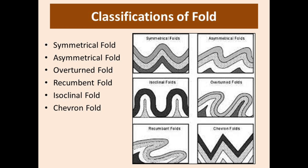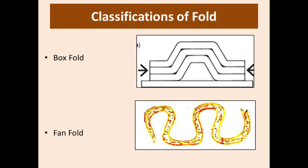The next type is chevron fold. A chevron fold is one in which hinges are sharp and angular, the fold has planar limbs, and the axial plane is vertical, whereas the limbs dip in opposite directions.